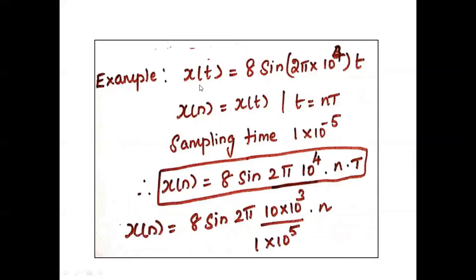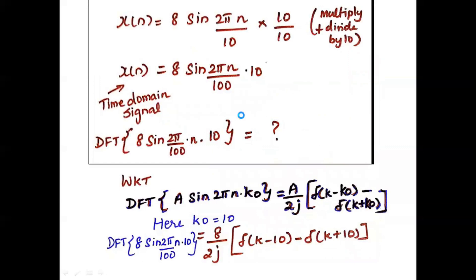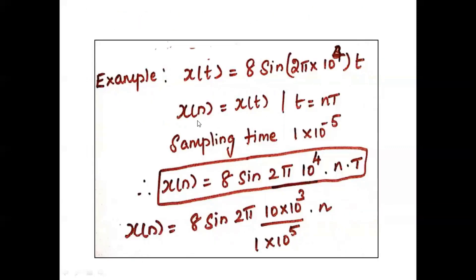To take an example, x(t) = A·sin(2π × 10⁴t). First we have to do the sampling. We will get x(n) = x(t) at t = nT, where T is the sampling time 1 × 10⁻⁵, so x(n) = 8·sin(2π × 10⁴ × nT). The t is replaced with nT.